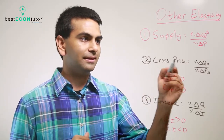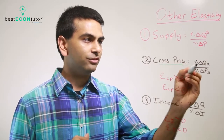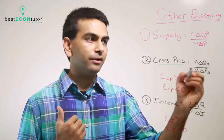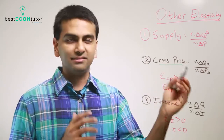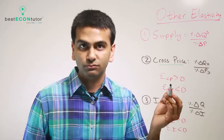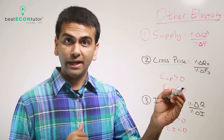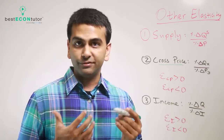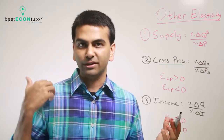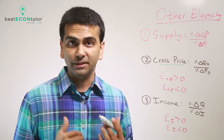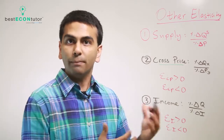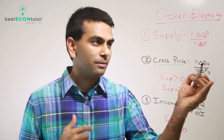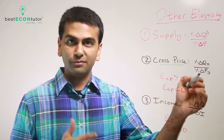Cross-price elasticity is the percent change in the quantity of one good divided by the percent change in the price of some other good. Notice we don't use absolute values here — what's key is not whether it's bigger or less than one, but whether it's positive or negative. For example, if Coke becomes expensive, you now want more Pepsi instead, so a positive price change corresponds to a positive quantity change — positive over positive is positive.